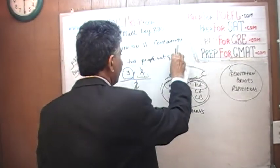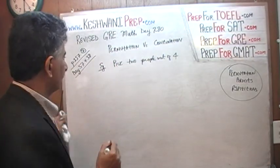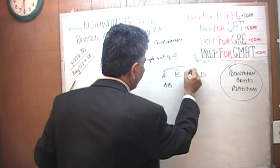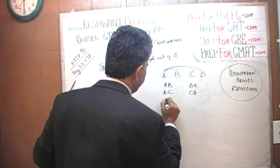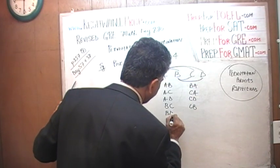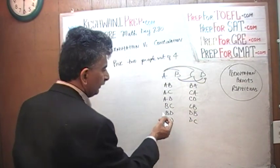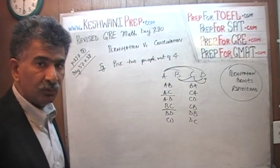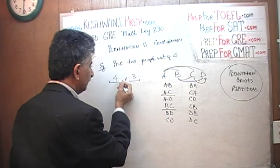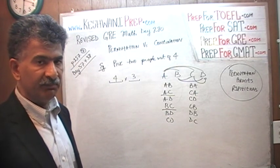If we had to pick two people out of four — A, B, C, D — we can have AB or BA, AC or CA, AD or DA, BC or CB, BD or DB, and CD or DC. There are twelve different ways as long as order matters — that is permutation. But if you're talking about combination, picking simply two people out of four, we realize there are four ways of picking a first person and three ways of picking a second person.